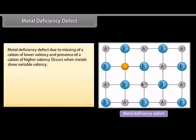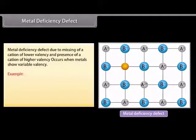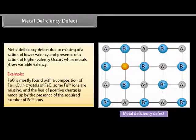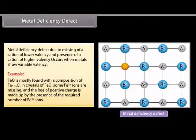Metal deficiency defect: due to missing of a cation of lower valency and presence of a cation of higher valency, this occurs when metals show variable valency. Example: FeO is mostly found with a composition of Fe₀.₉₅O. In crystals of FeO, some Fe²⁺ ions are missing and the loss of positive charge is made up by the presence of the required number of Fe³⁺ ions.